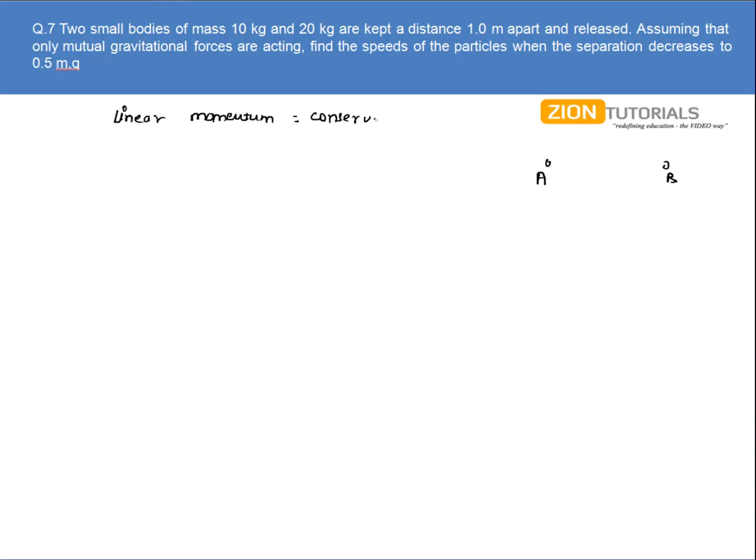So I can write initial momentum as well as final momentum. Initial momentum is zero because mass M1 into zero plus M2 into zero, since the initial velocity of both of them is zero. This equals final momentum, so it will be M1 into V1 and M2 into V2.